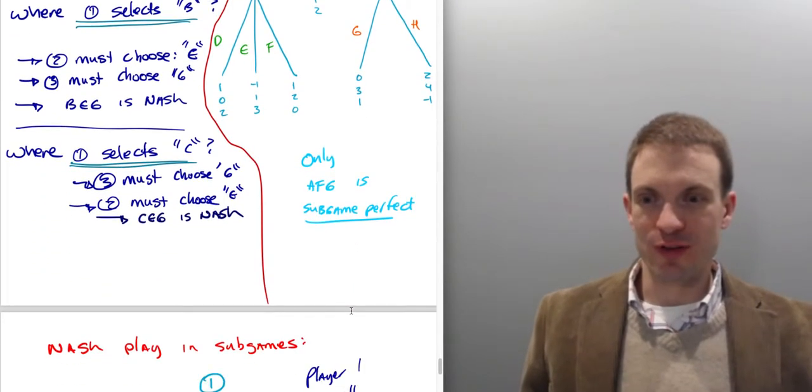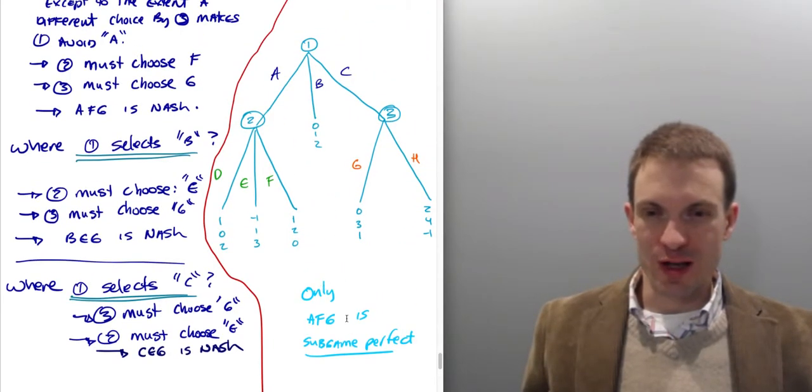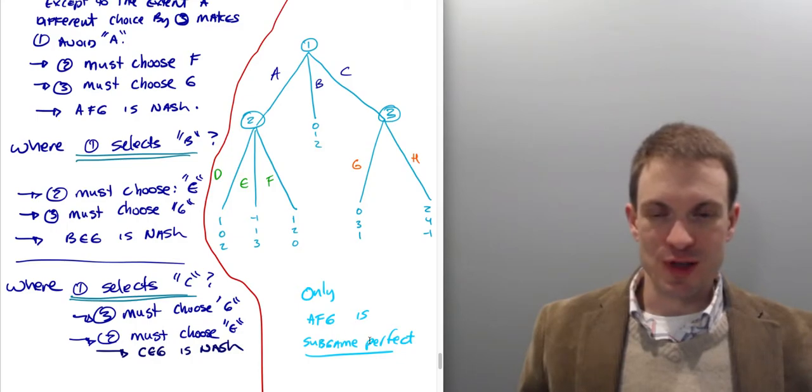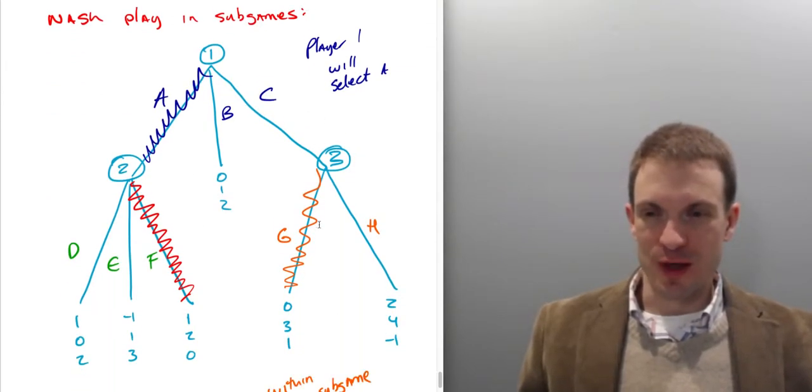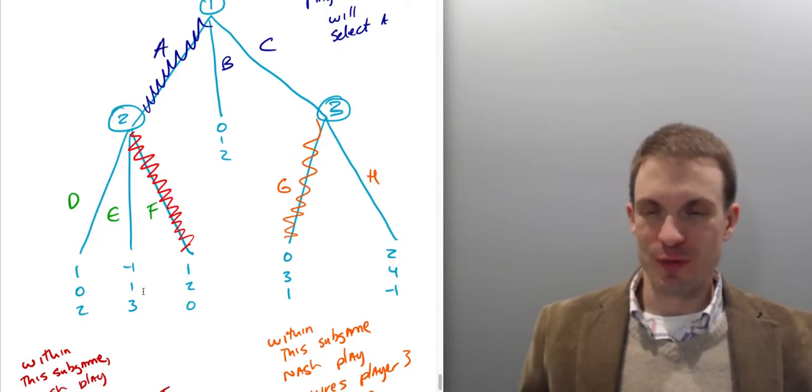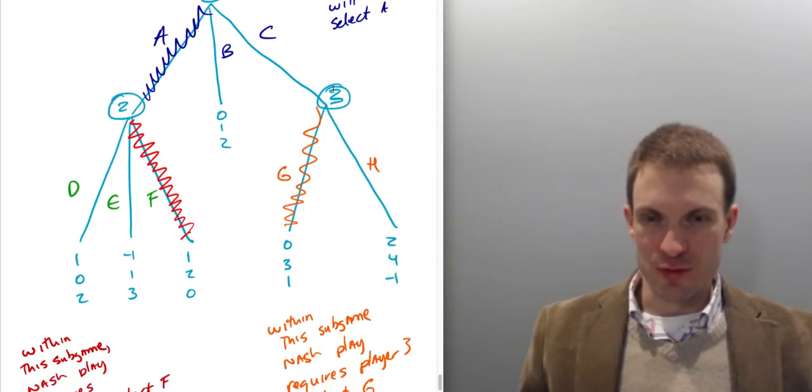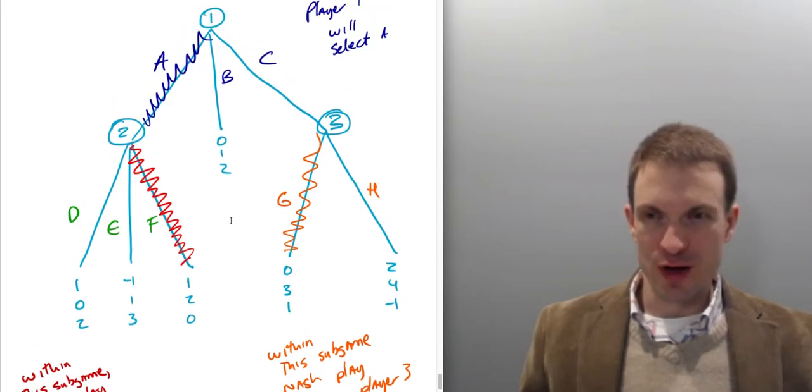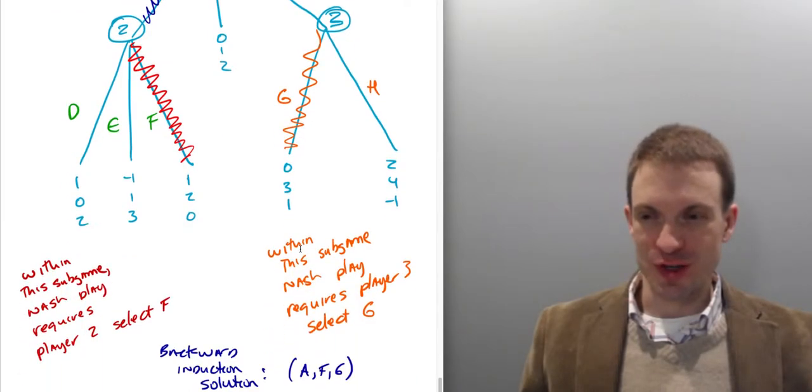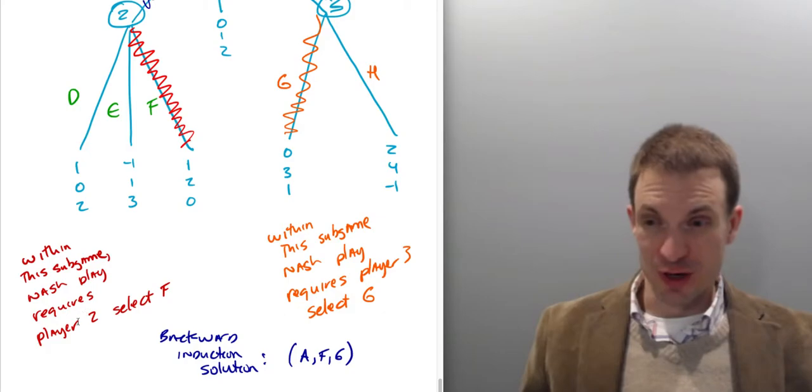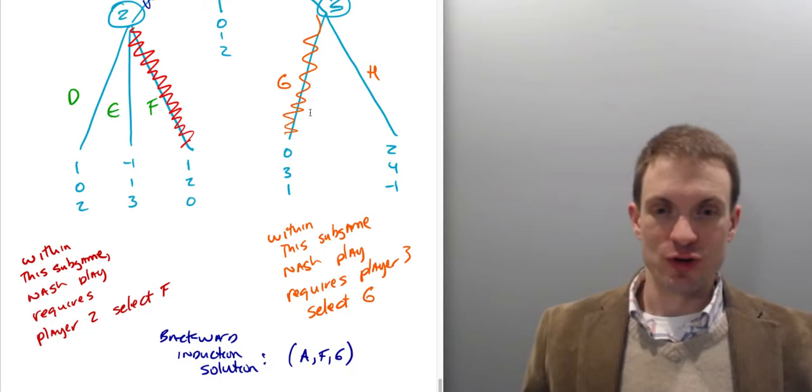Now of these, only AFG is subgame perfect. And so let's see, well, what's going on here is we're requiring that, we're requiring that the strategy profile is stipulating Nash play in all subgames, and that's only happening in AFG. So we can see this by backward induction. So Nash, let's look at Nash play in subgames. So in this subgame, what's player two going to do? Well, Nash play for player two involves playing F. Nash play for player three involves selecting G, right, because one is bigger than minus one. And then if player one looks forward, they're going to compare one, zero, and zero. Player one has to choose A. So AFG is consistent with Nash play in all subgames. So within this subgame, this first one, Nash play required player two to select F. Within this subgame, Nash play required player three to select G. And then our backward induction solution is AFG. And for this class of games, subgame perfect Nash Equilibrium and backward induction are going to coincide.